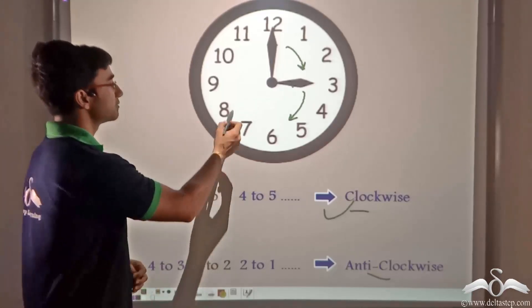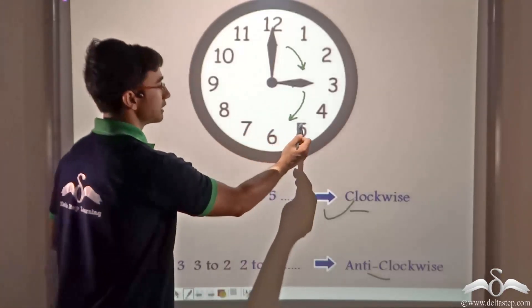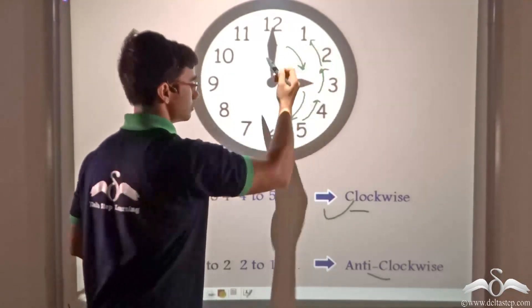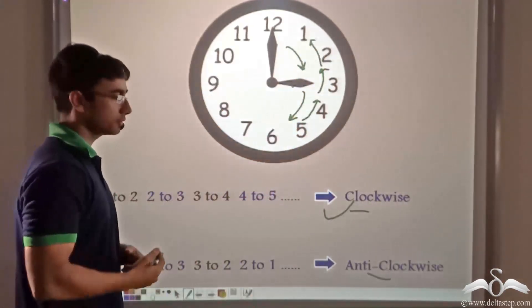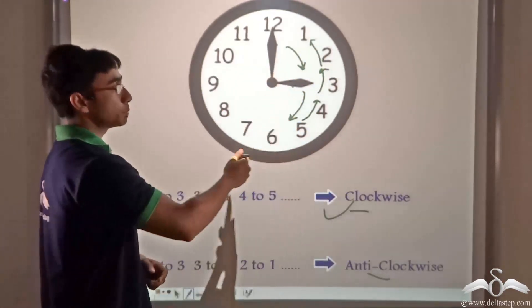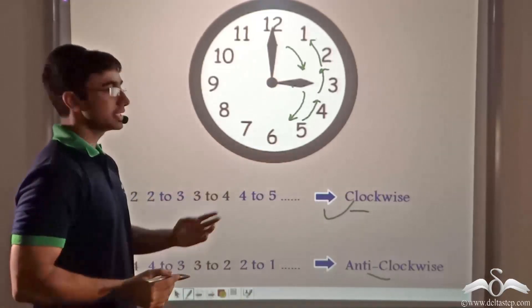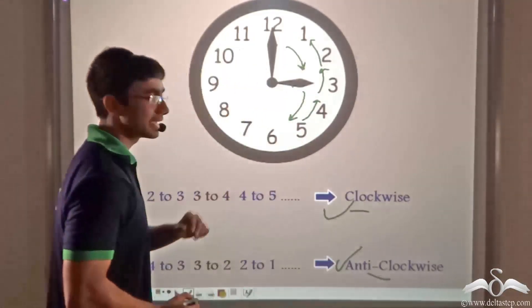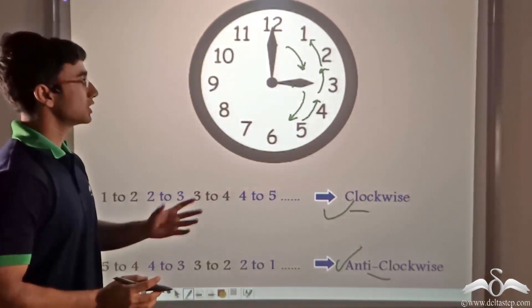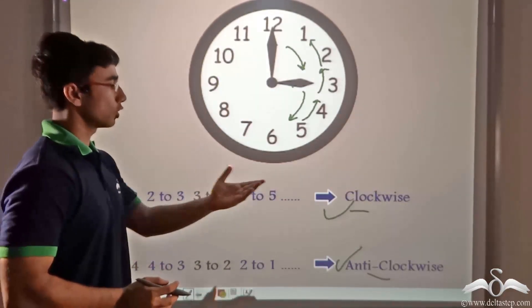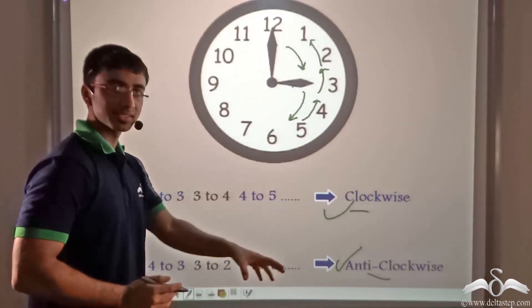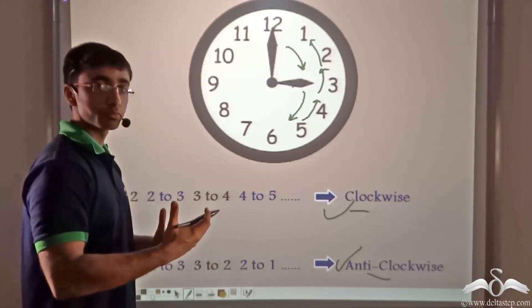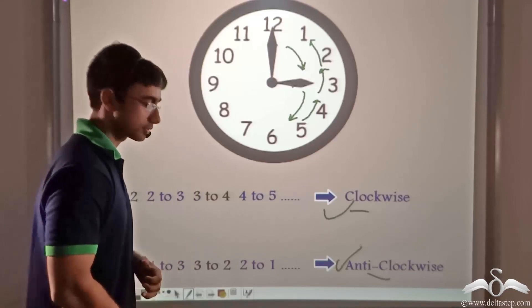Conversely, if we consider moving from five to four, or four to three, three to two, and two to one, then that direction is opposite to the direction in which the hands move. So this is known as the anti-clockwise direction. With the knowledge of what clockwise and anti-clockwise are, let us proceed further to study about what other kind of motion a force might produce.